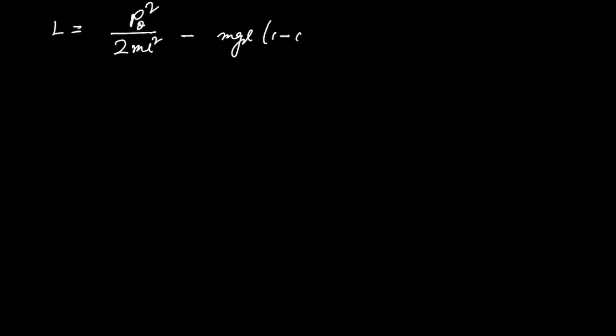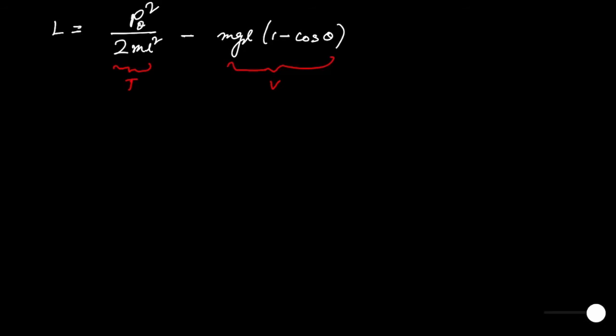So we can write the Lagrangian as L = p_θ² / 2ml² − mgl(1 − cosθ). Here, this first term is nothing but T and this second part is nothing but V, the potential energy.